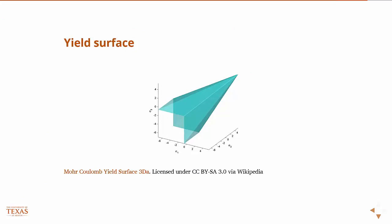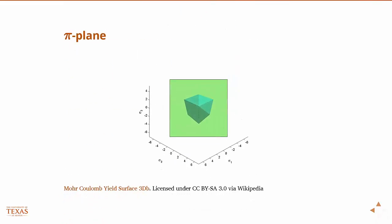If we look at this Mohr-Coulomb criteria in the principal stress space, including all three principal stresses, then you get this kind of conic thing where the angle of this cone is related to the internal friction angle. If we look right down the pi plane, where sigma one equals sigma two equals sigma three, if we look right down it, then you get this hexahedron type shape thing.